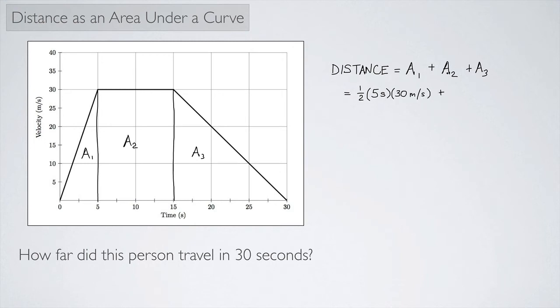Then I have area two, which is this rectangle right here. The base goes from five to 15, so the base in this case would be 10 seconds. And the height is still 30, so this is 30 meters per second.